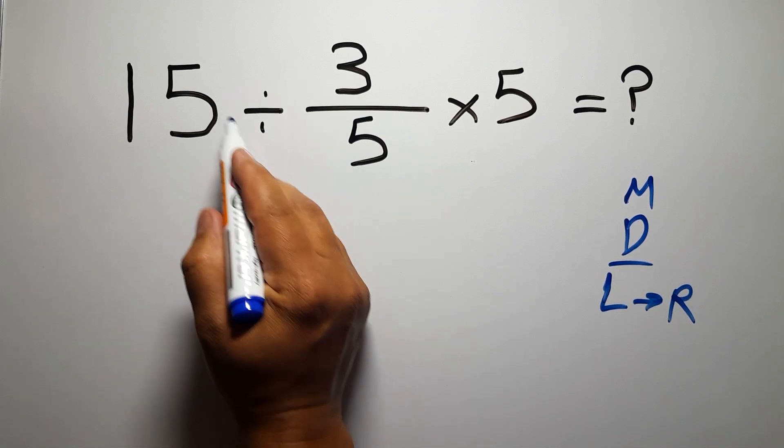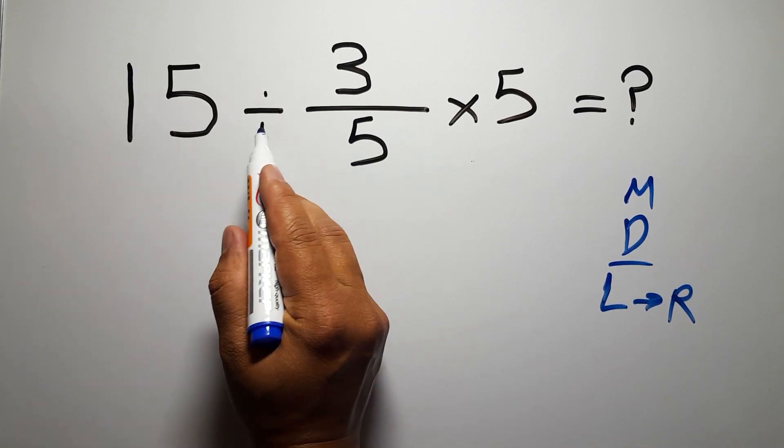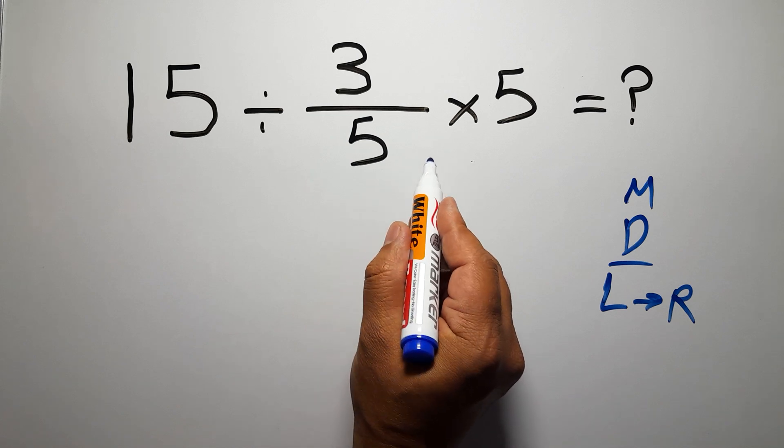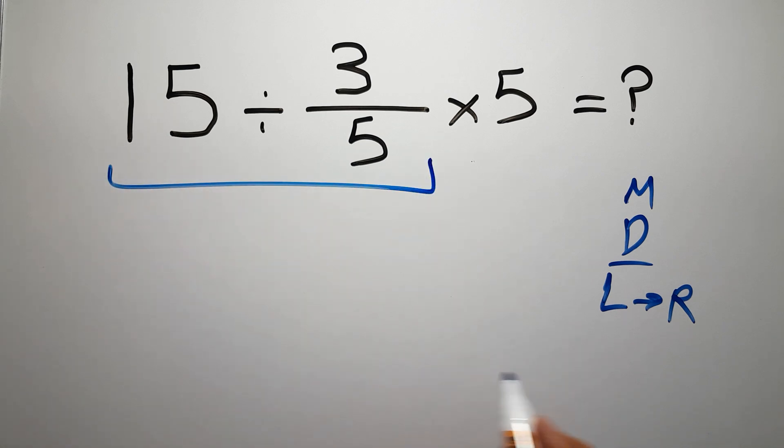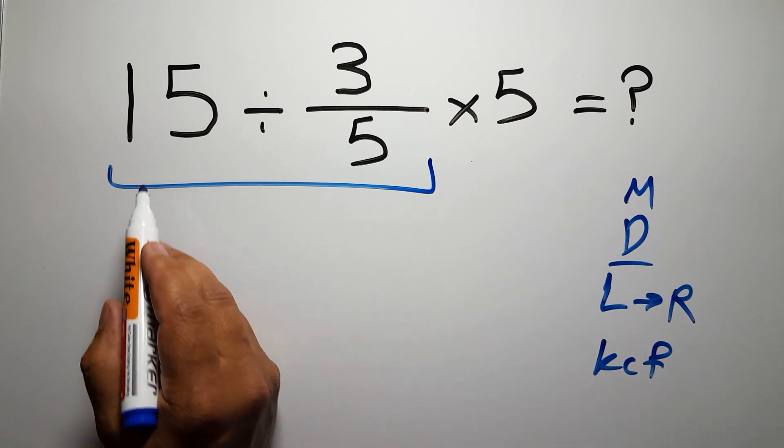Okay, so first this division: 15 divided by 3 over 5. According to the KCF rule, K stands for keep, C stands for change, and F stands for flip.